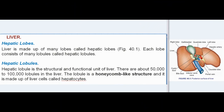The liver is made up of many lobes called hepatic lobes. Each lobe consists of many lobules called hepatic lobules. The hepatic lobule is the structural and functional unit of the liver. There are about 50,000 to 100,000 lobules in the liver. The lobule is a honeycomb-like structure made up of liver cells called hepatocytes.